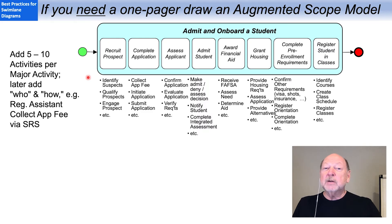So I really urge you to think twice before you cram a swim lane diagram into a one pager. Because if you do, you're defeating the graphic power of the diagram. If you do need a one pager, and we all do, then I suggest the augmented scope model.